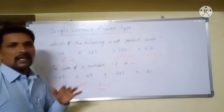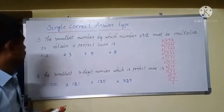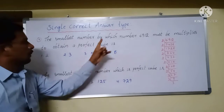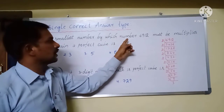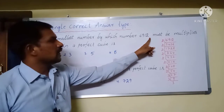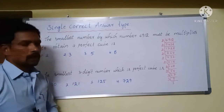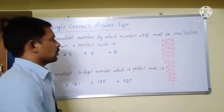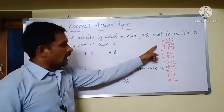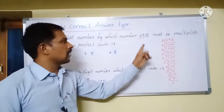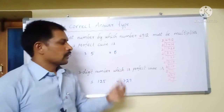Problem 7: the smallest number by which 6912 must be multiplied to obtain a perfect cube. We perform prime factorization of 6912 to identify all its factors.